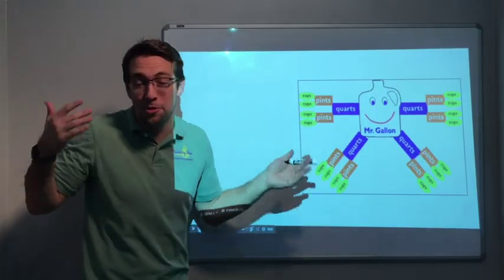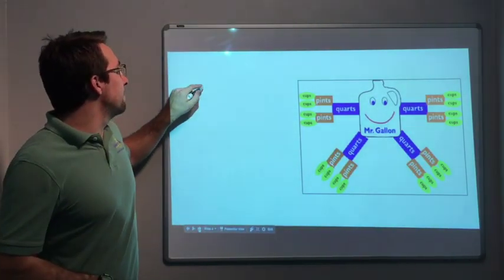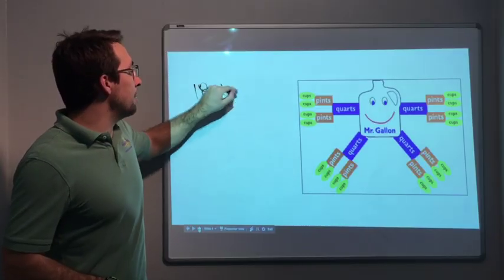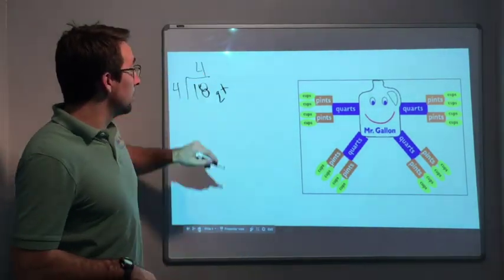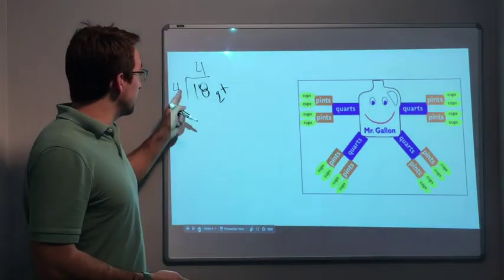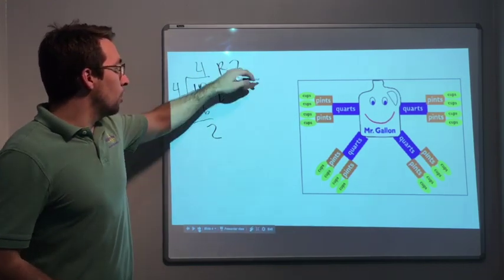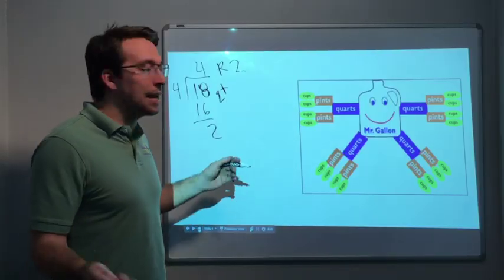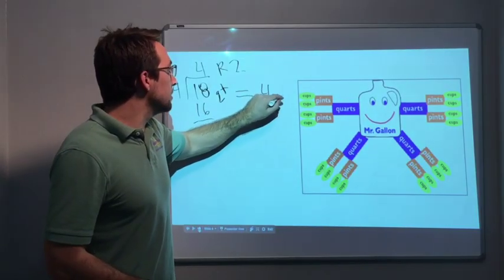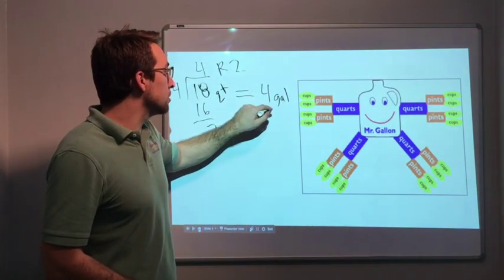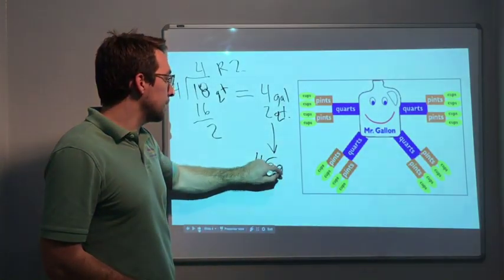It's a cool illustration to look at. So let's say I have 18 quarts, how many gallons do I have? Well, 18 divided by 4 is what? 4 times 4 is 16, so minus 2, so 4 remainder 2. What's 2 quarts equal? 2 quarts is half a gallon. So 18 quarts equals 4 gallons and 2 quarts, or you could say that equals 4.5 gallons.